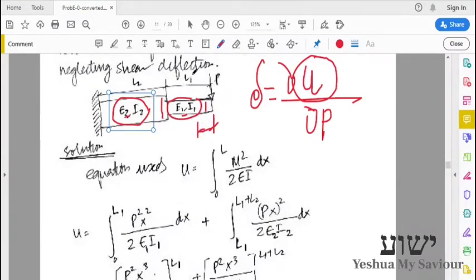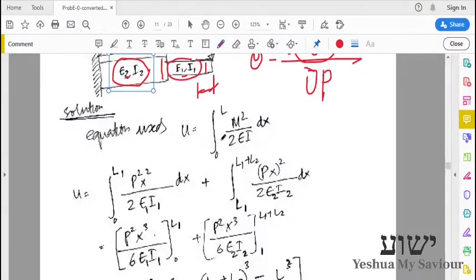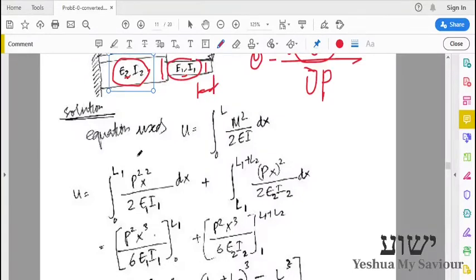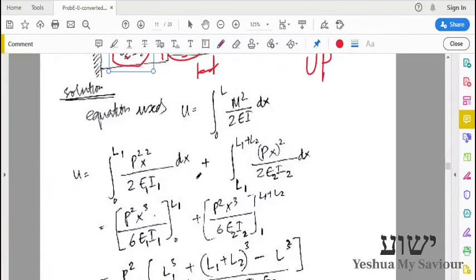We first consider this distance L1 and we will take the moment there. We split the integral into two, that is L into L1 plus L2. First we consider this half, that is zero to L1. The equation is simple, we just substitute and integrate dx.